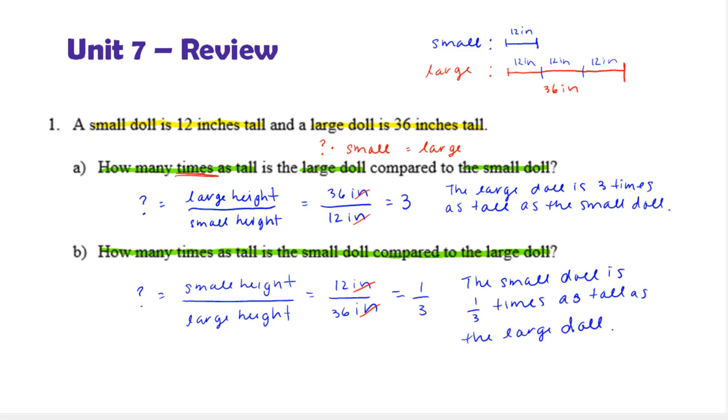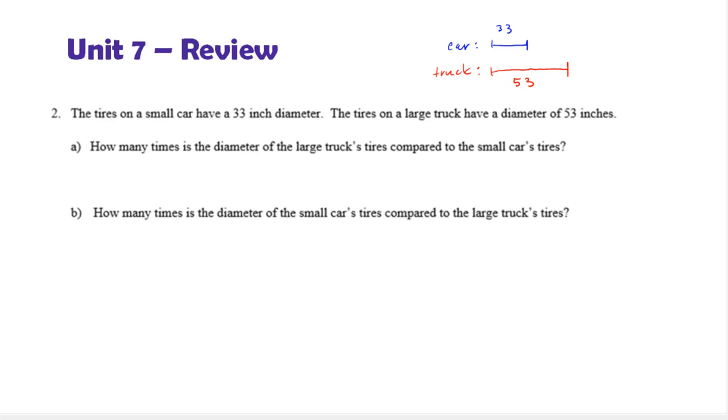Let's look at the next one. Here we have the tires on a small car have a 33 inch diameter, and the tires on a large truck have a diameter of 53 inches. And we're asked how many times, so again times indicating a multiplicative relationship, is the diameter of the large truck's tires compared to the small car's tires.